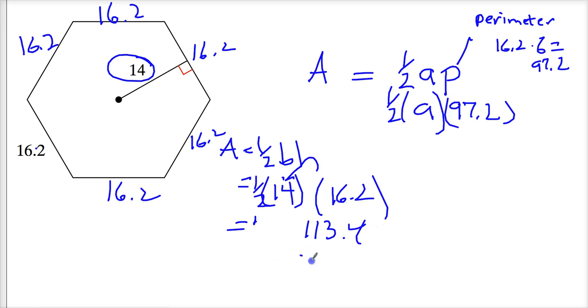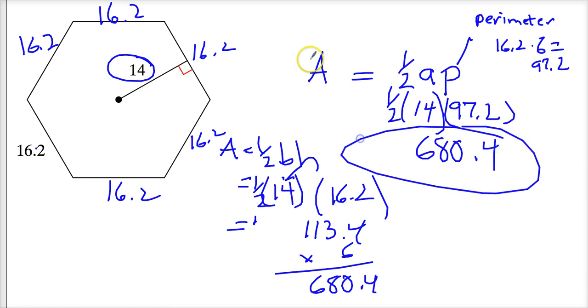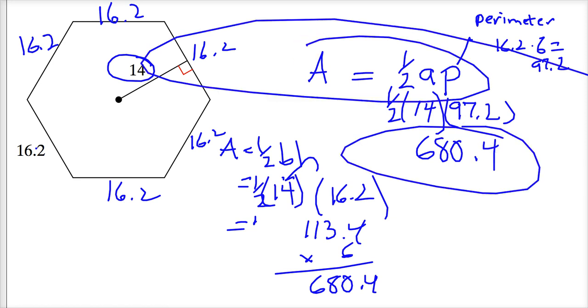Now you might remember, this times 6 gave us the area of the whole figure, and we figured that out to be 680.4. So when I do 0.5, or 1 half, times 14, times 97.2, I end up with, shockingly, 680.4. So that's my formula for the area of a polygon given a side and an apothem.